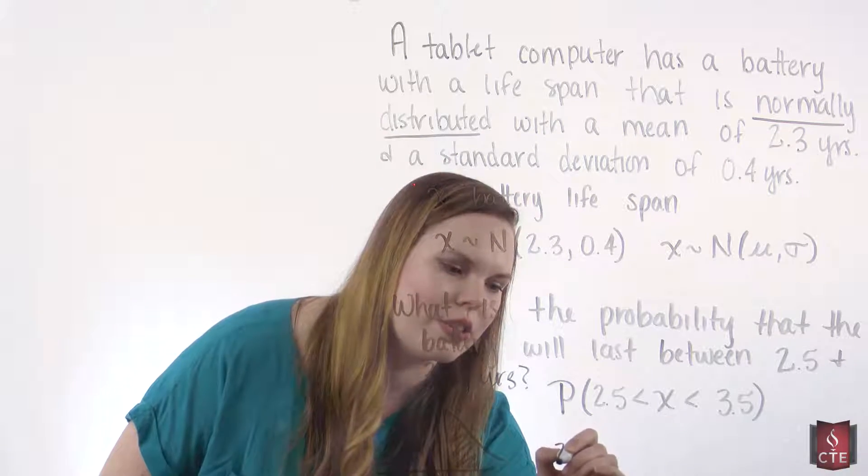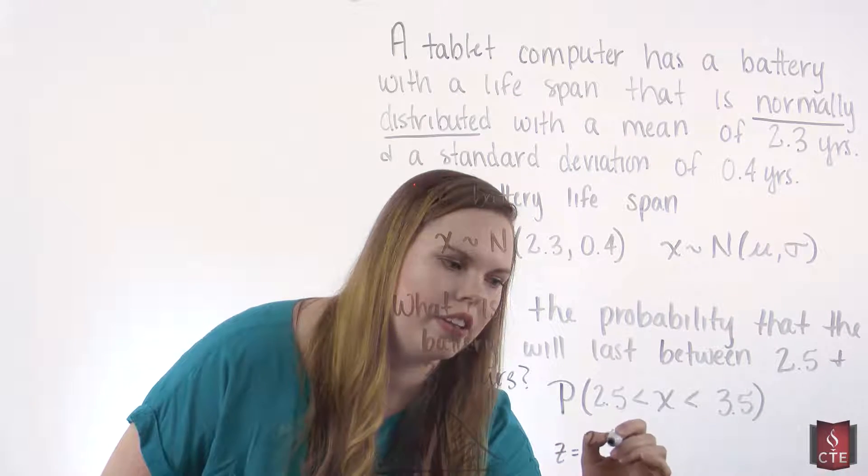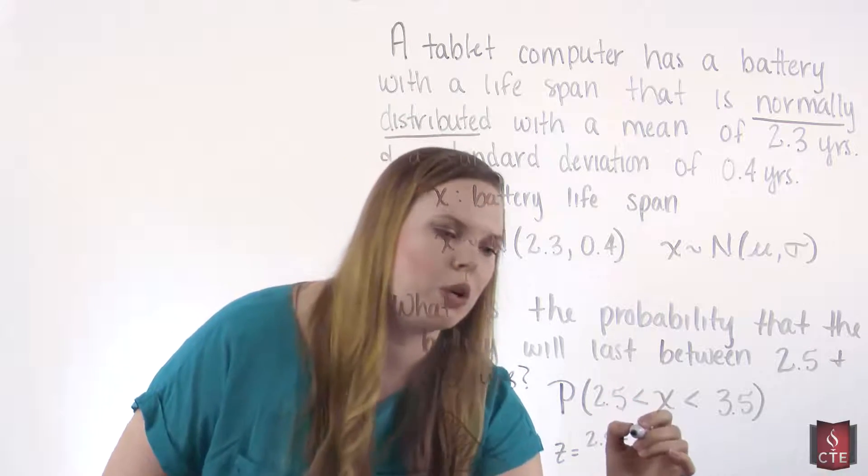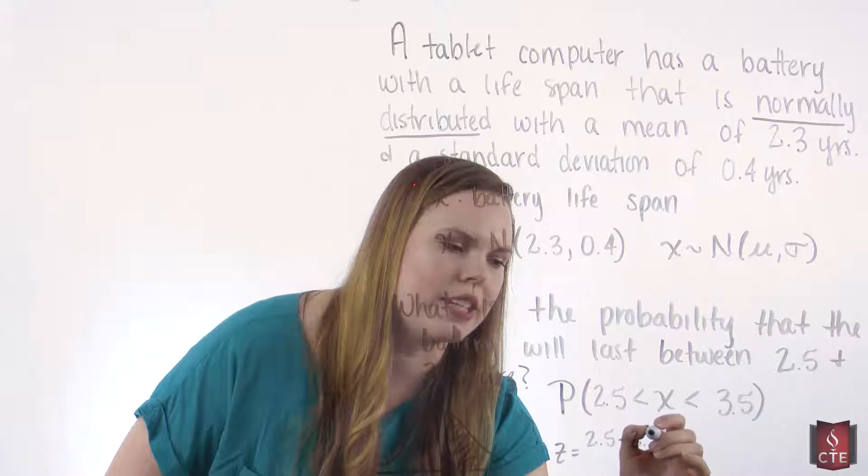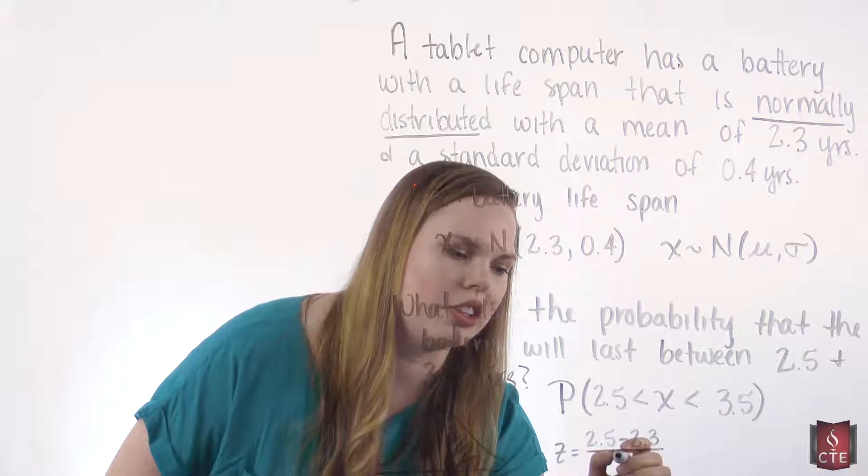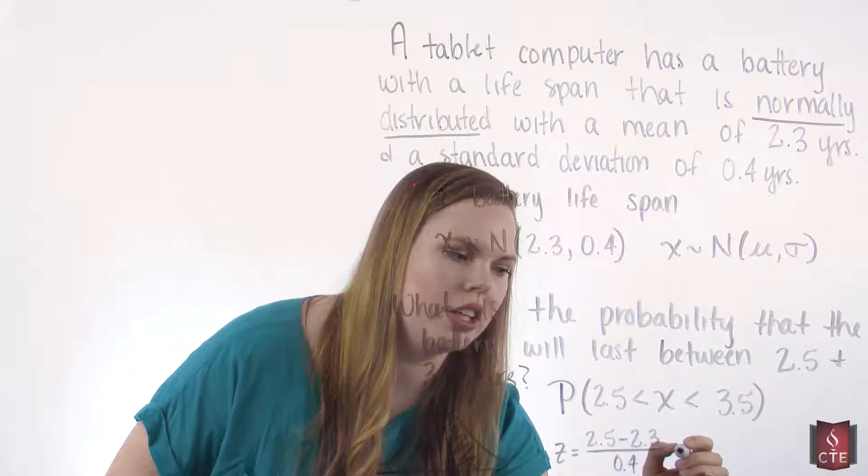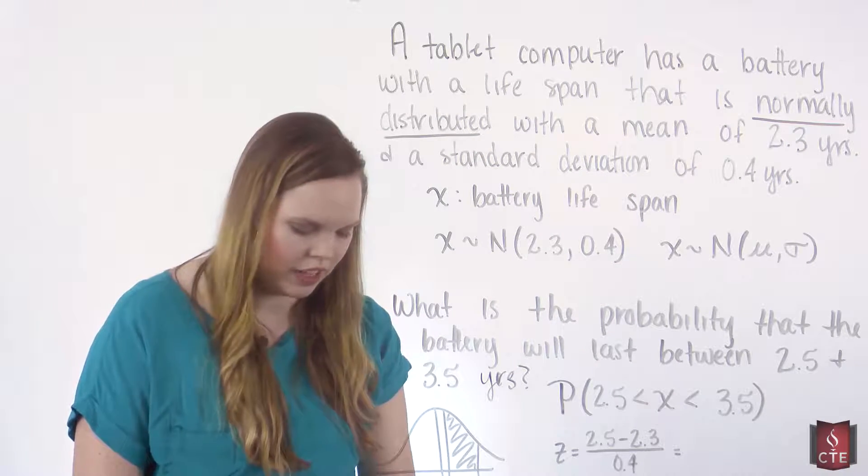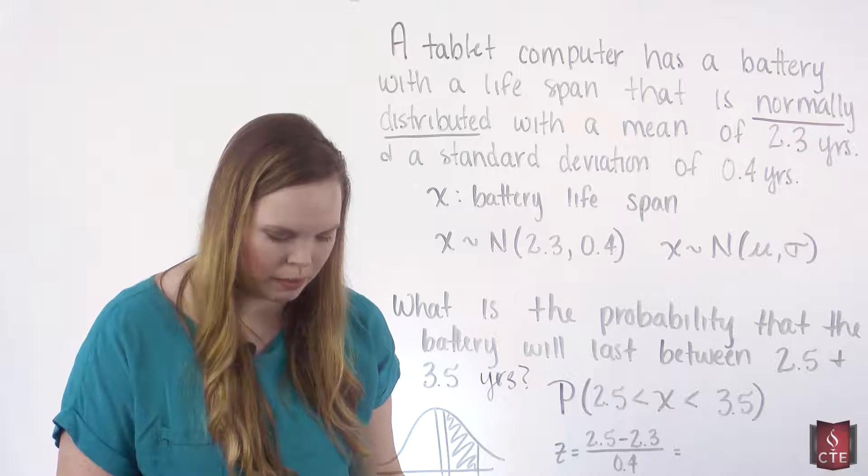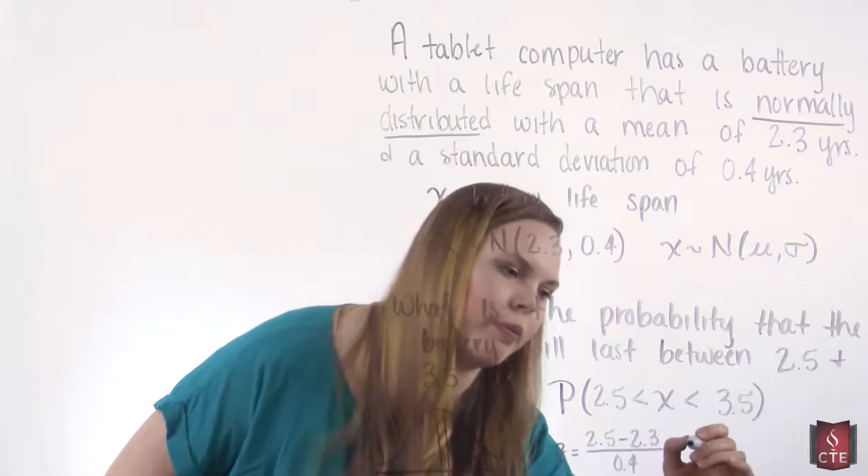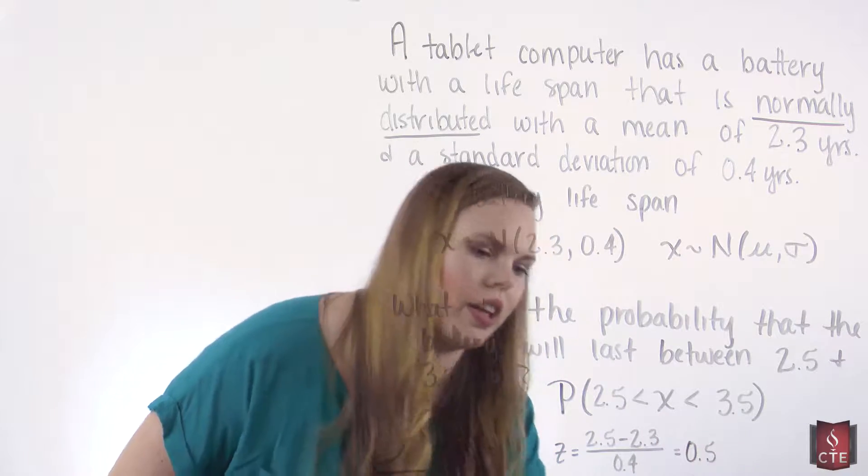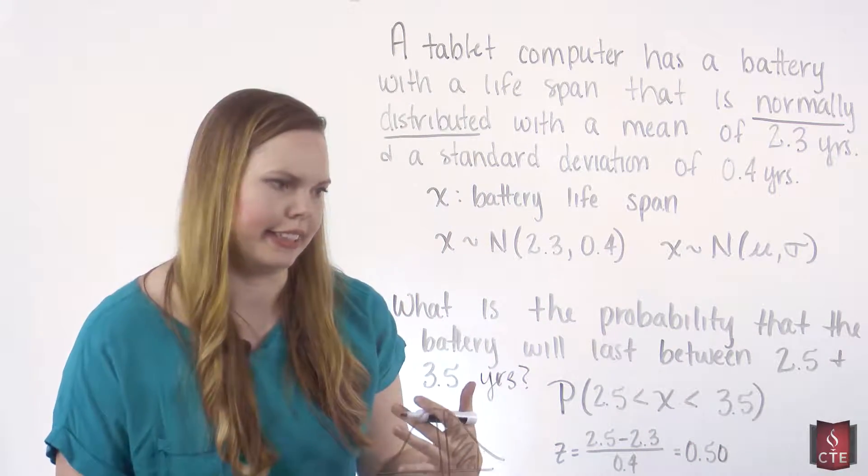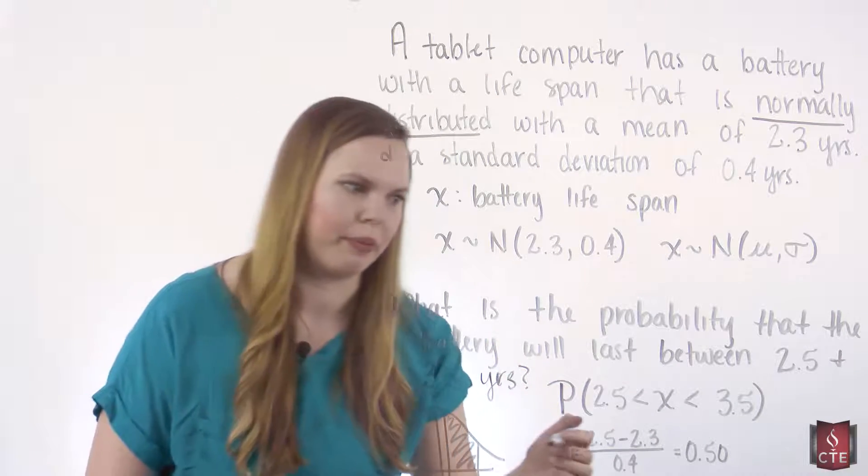So let's find the z-score of 2.5 using that z-score formula of x minus mu. So our mu, our mean, is 2.3 divided by the standard deviation, 0.4. The z-score of 2.5 is, if you do this math, 0.50. We always round our z to two decimal places because that's what it is in the table.